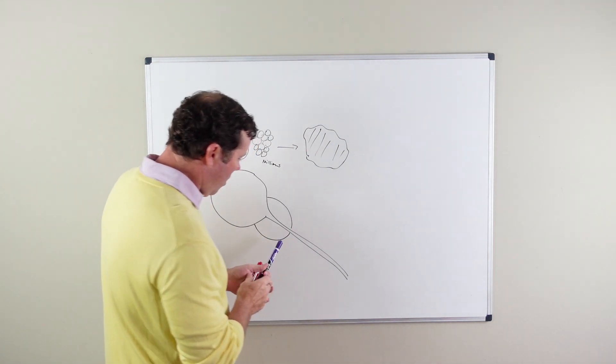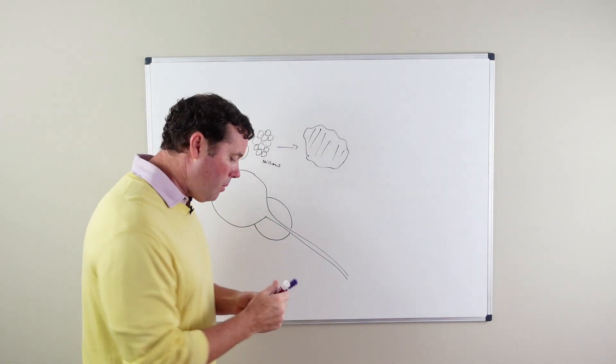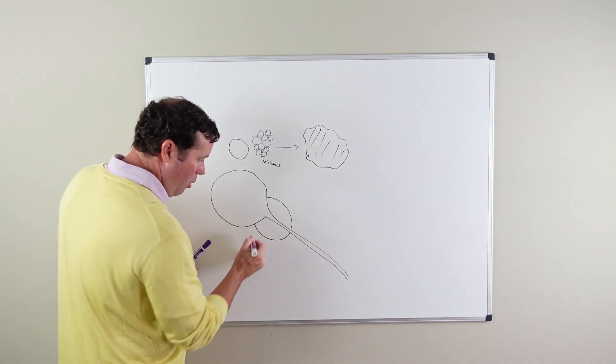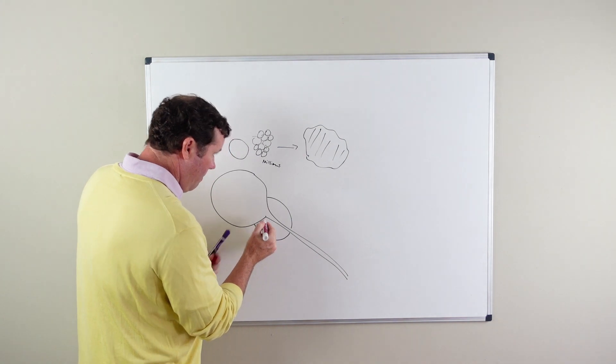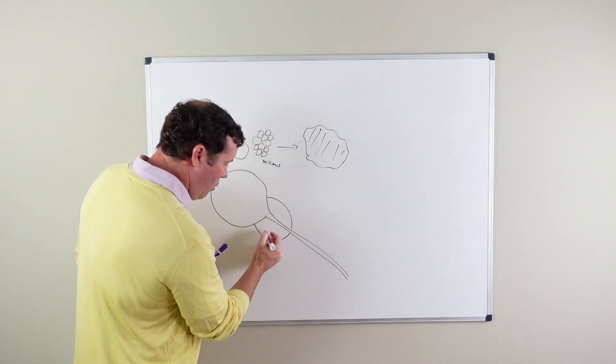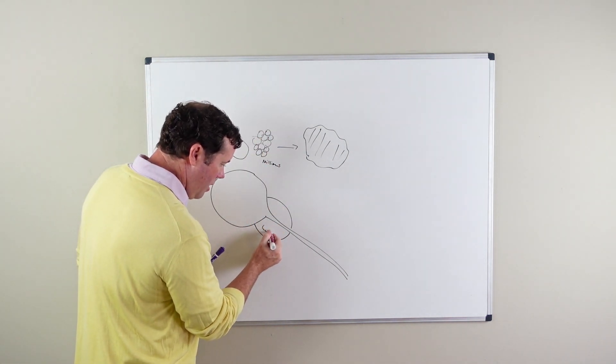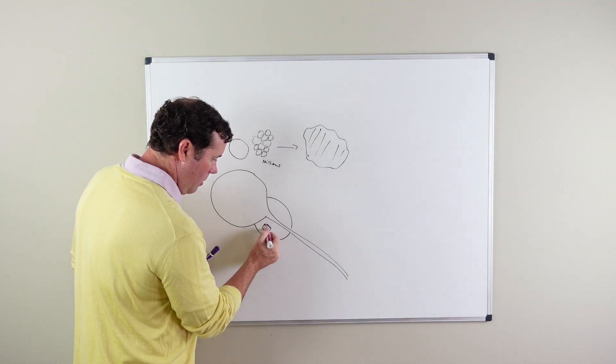You start with one abnormal cell, one abnormal cell that grows uncontrollably. Then with millions of these abnormal cells, you create some type of tumor.